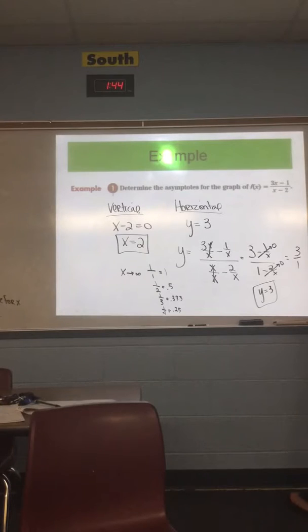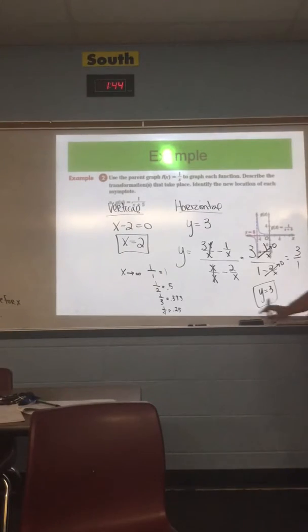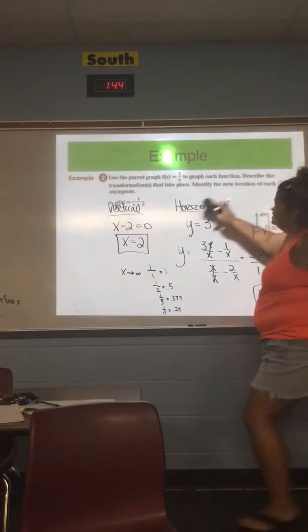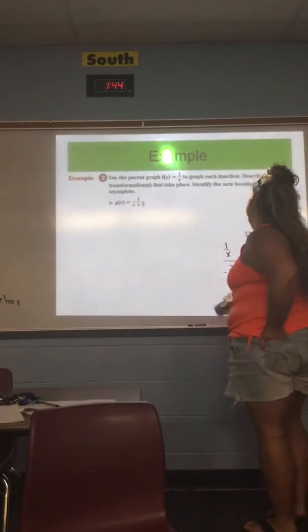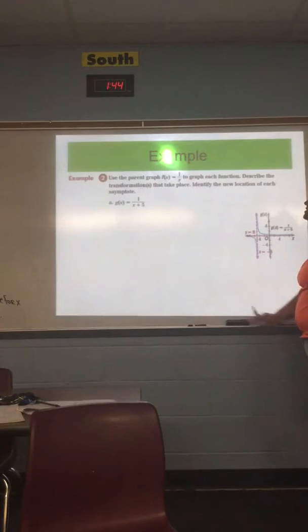It seems like way more complicated. It is. I'm not real sure why they choose to do it this way in this one. But yeah. All right. So go ahead and hit enter. Okay. Let's look at this next one. This one says, all right, it says use the parent graph of 1 over x to graph each function. Describe the transformations that take place. Identify the new location of each asymptote.